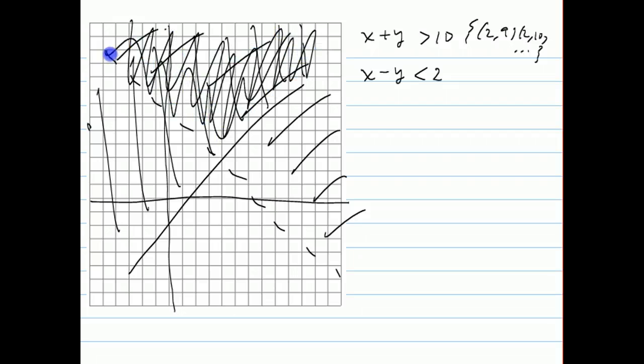We shade the side that contains that point. Notice how there's a triangular portion that has both types of shading — that is the solution set. Those are all the points where adding them gives greater than 10 and subtracting them gives less than 2.